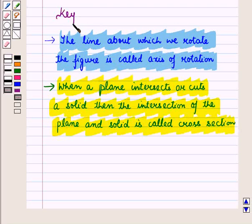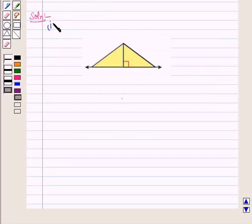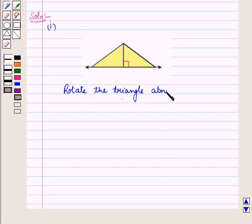Now these results will work out as a key idea for solving the given question. Let us start with the solution of the given question. In the first part, we have to rotate the triangle about the horizontal line, which is the axis of rotation.